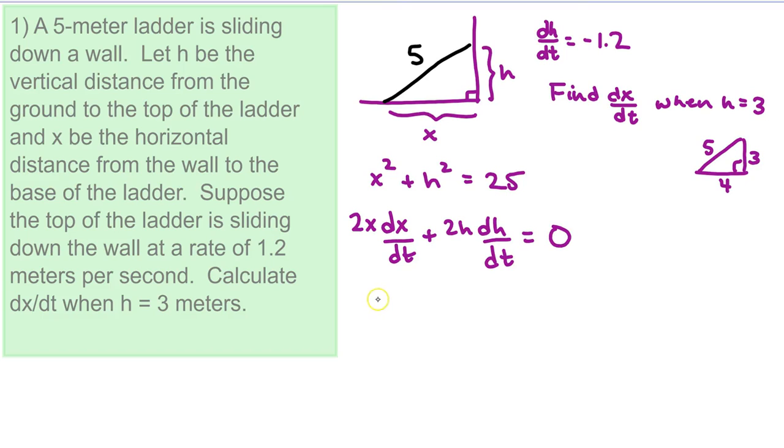Okay, now from here I'm going to divide both sides of the equation by 2, just to simplify things a little bit. And then we're ready to substitute some numbers in and solve for dx dt. So x is 4 at this moment, h is 3 at this moment, dh dt is negative 1.2.